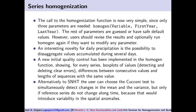The call to the homogenization function is now very simple since only three parameters are needed: the short name for the variable, first year, and last year. The rest of the parameters, and there are many, are guessed or have saved default values. Users should revise the results and optionally run homogen again to modify any parameter. An interesting novelty for daily precipitation is the possibility to disaggregate values accumulated during several days. A new initial quality control has been implemented in the homogen function, showing for every series box plots of values, detecting and deleting clear errors, differences between consecutive values, and lengths of sequences with the same value.